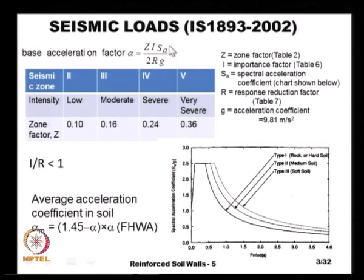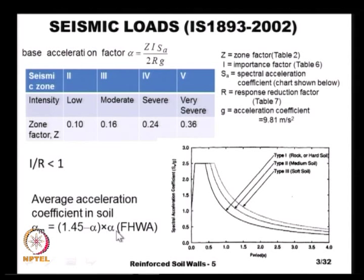Capital R is the response reduction factor and G is the acceleration due to gravity. Once we estimate this base acceleration factor, we can calculate the actual acceleration coefficient active in the soil through the formula proposed by the Federal Highway Administration: alpha_m = 1.45 − alpha times alpha.